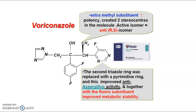Voriconazole has an extra methyl substituent which increases potency and creates two stereocenters in the molecule. The active isomer is the anti-RS isomer. The second triazole ring was replaced with a pyrimidine ring, which improved activity against aspergillus and, together with the fluoro substituent, also improved metabolic stability.